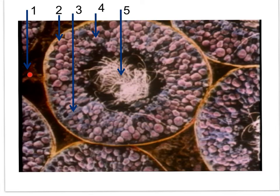Can you identify the numbered structures? Interstitial cells of Leydig, spermatogonia, Sertoli cell, spermatocytes in some stage of meiosis, and spermatozoa.